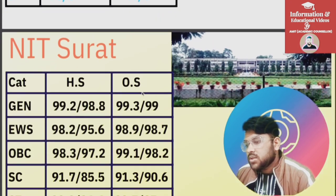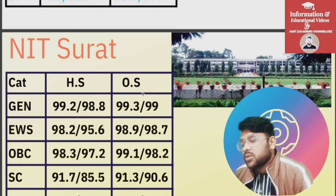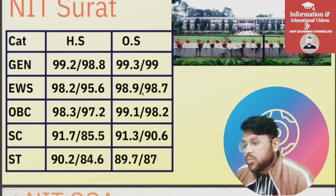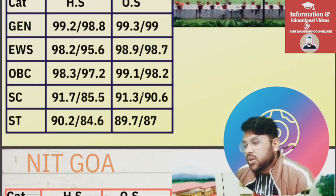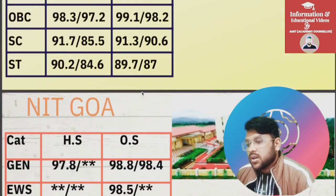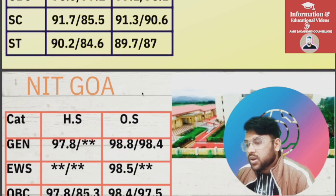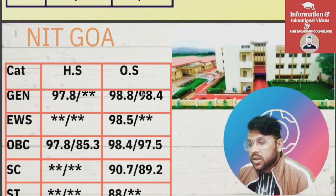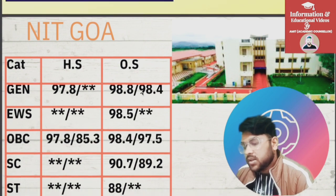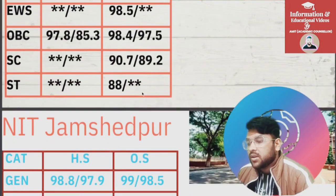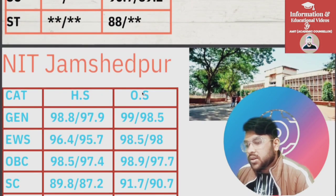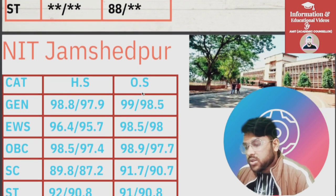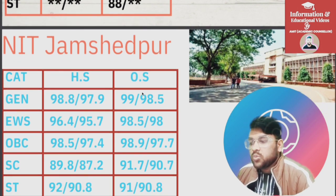For NIT Surat: General 99.3, EWS 98.9, OBC 99.1, SC 91.3, ST 89.7. For NIT Goa: General 98.8, EWS 98.5, OBC 98.4, SC 90.7, ST 88.4. For the next NIT: General 99, EWS 98.5, OBC 98.9, SC 91.7, ST 91 — for General, EWS, OBC, SC, ST respectively.